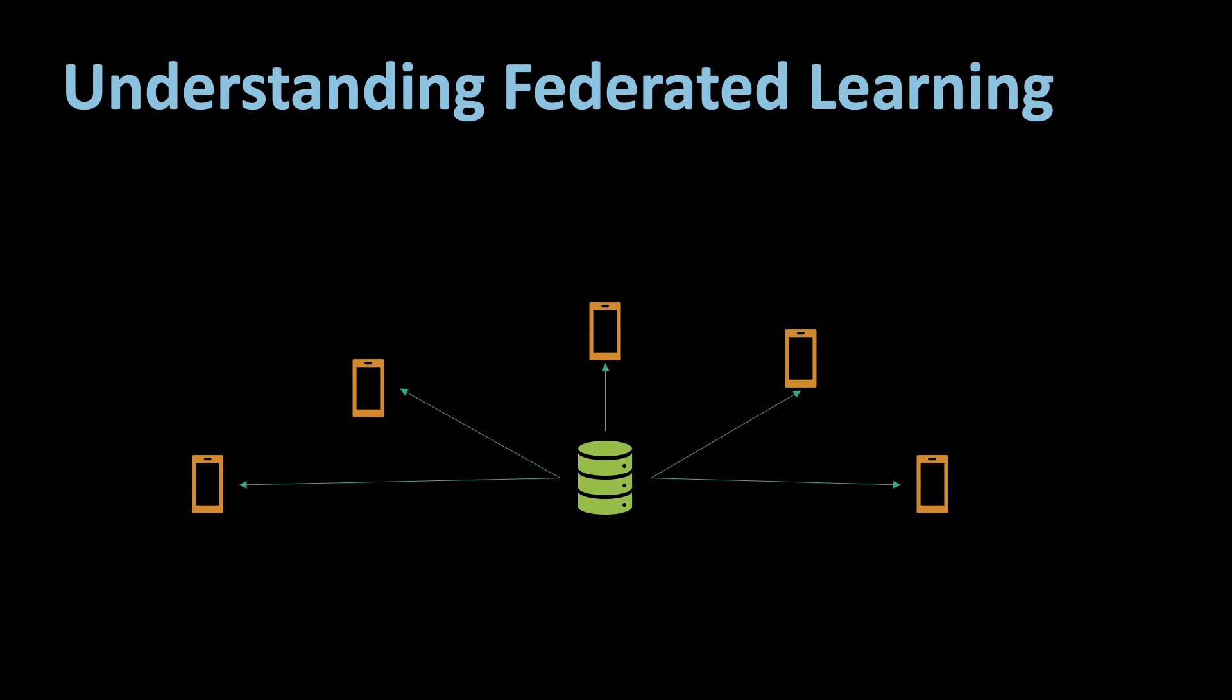In a typical machine learning setting, data from various sources is collected, centralized and analyzed on a central server. However, with federated learning, the learning process is decentralized and happens locally on each device or edge node. These devices collaborate to train a shared model while the individual data remains secure and private.